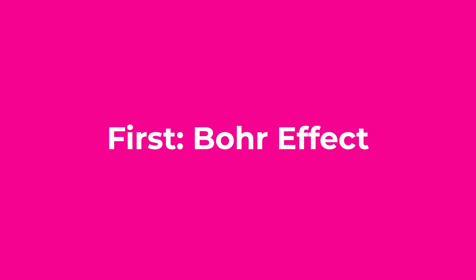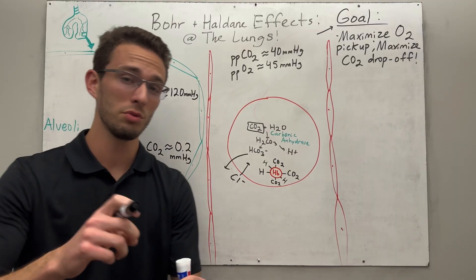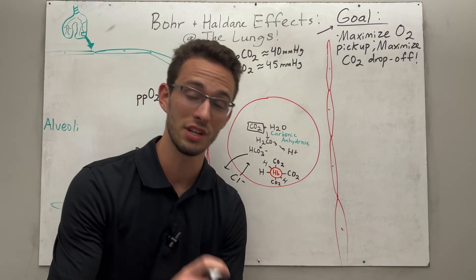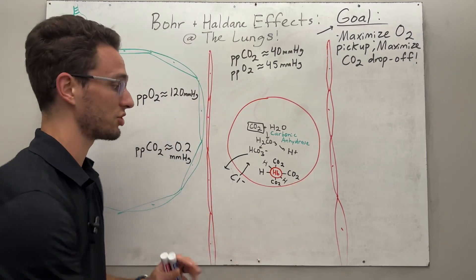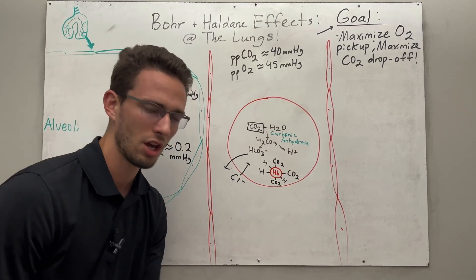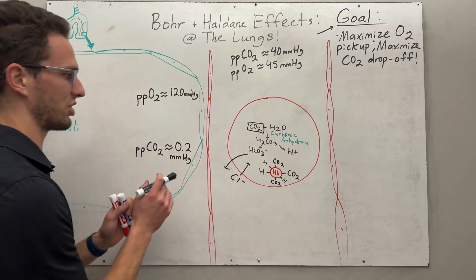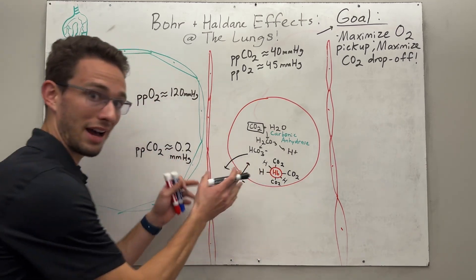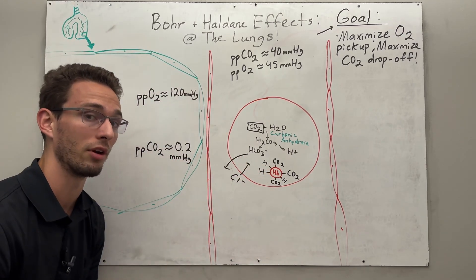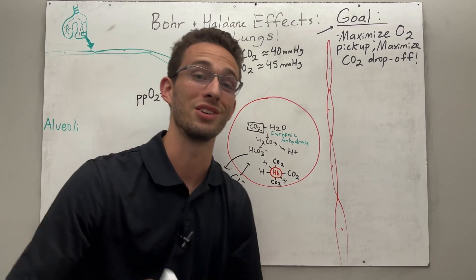So we're going to key into the Bohr effect first. Now remember the Bohr effect, when it was really acidic at the tissues, it was kicking off the oxygen from the hemoglobin. But in this case, what do we want to do with the oxygen? Well, we want to maximize its pickup by the hemoglobin. So how do we do that? Well, here's the thing.